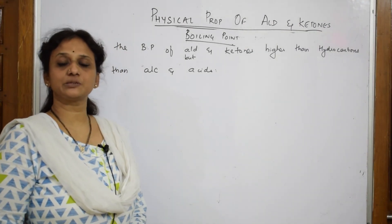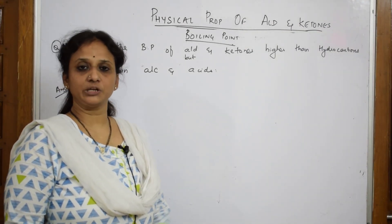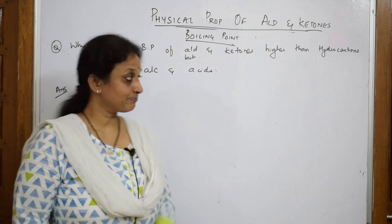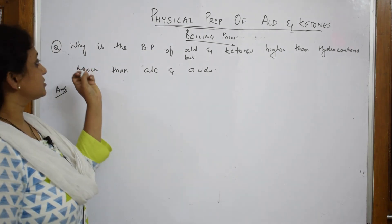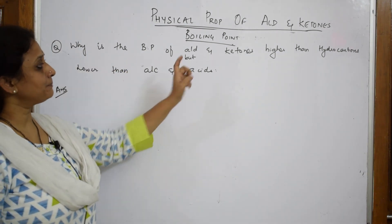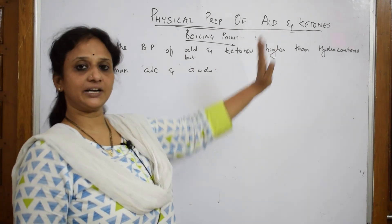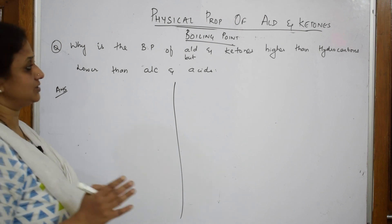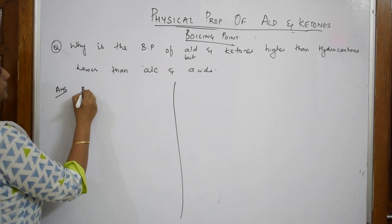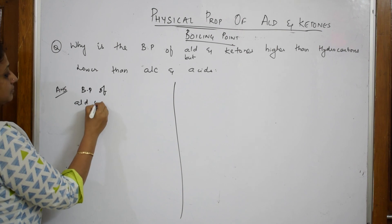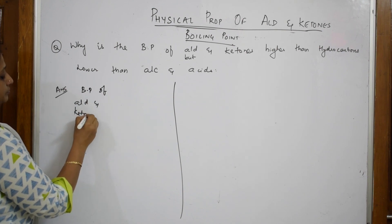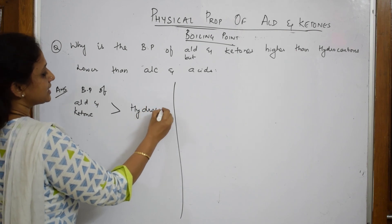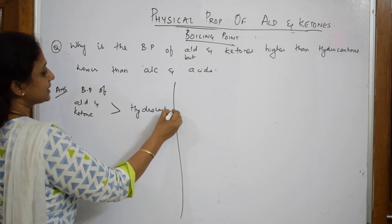Now let us do the next physical property: the boiling point trend. The question asks: why is the boiling point of aldehydes and ketones higher than hydrocarbons? The boiling point of aldehydes and ketones is greater than hydrocarbons such as alkanes, alkenes, and alkynes. But they are also lower than alcohols and acids — we will justify both parts.